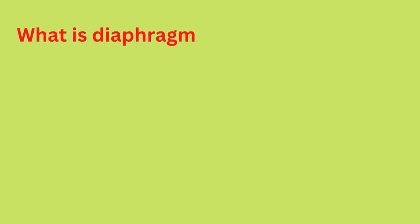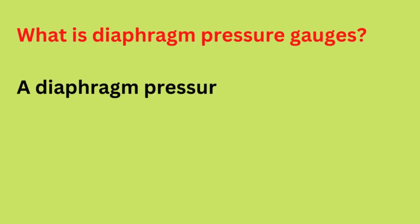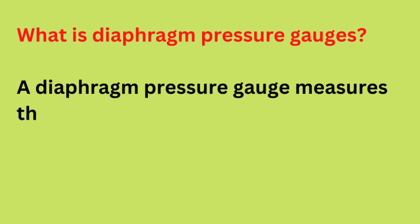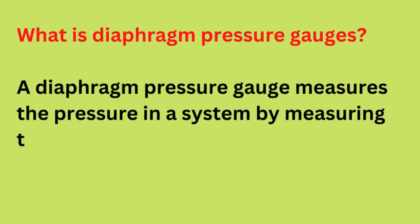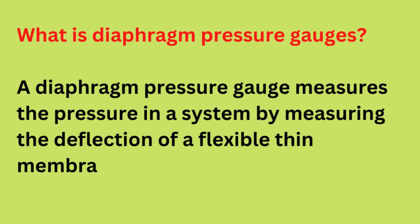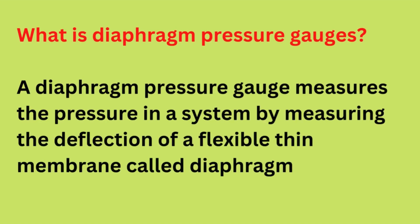What is a diaphragm pressure gauge? A diaphragm pressure gauge measures the pressure in a system by measuring the deflection of a flexible thin membrane called a diaphragm.